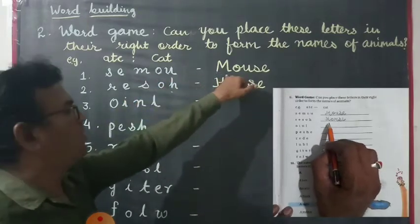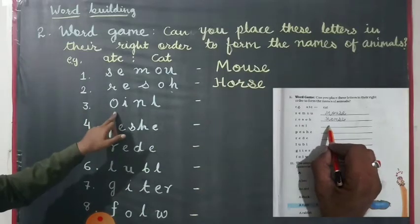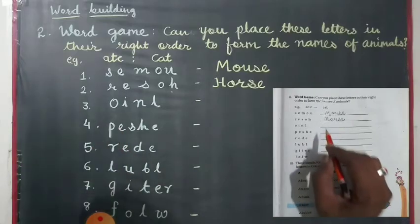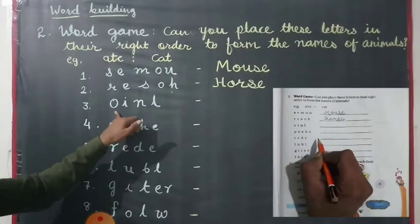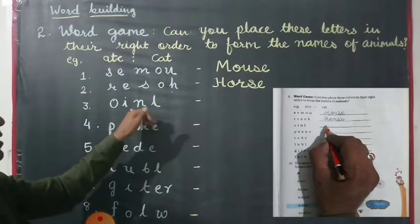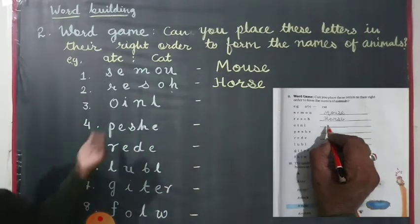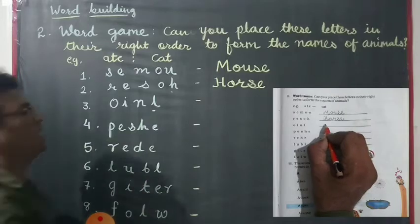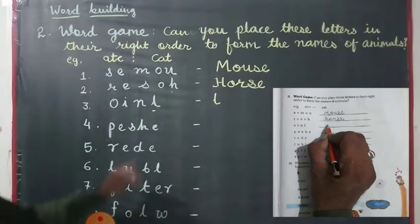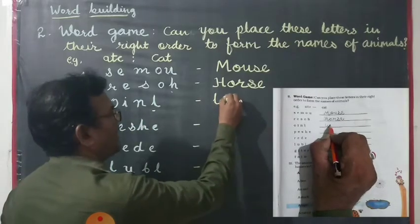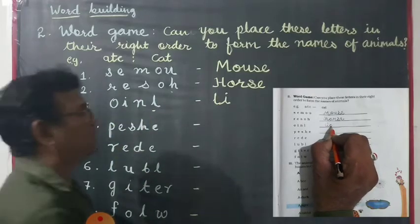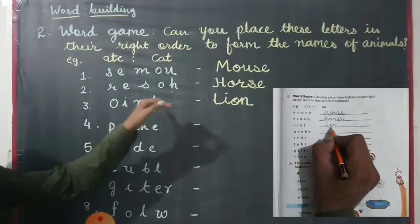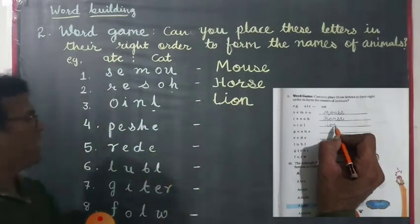First is mouse. Second is horse. And now the next set of letters: O, I, N, N — this is the king of the forest. We put L, I, O, N. Yes, the name of the animal is lion.